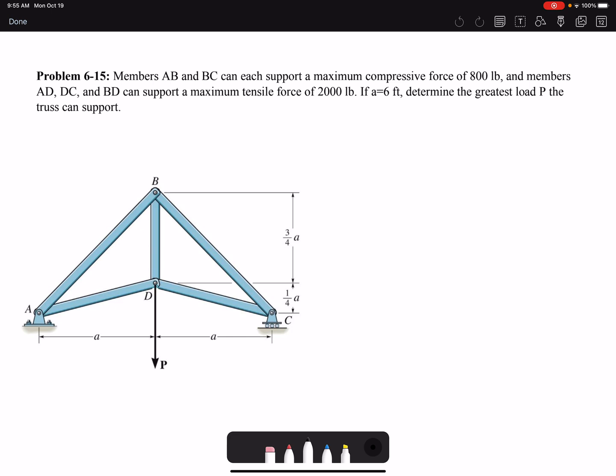Members AB and BC can each support a maximum compressive force of 800 pounds, and members AD, DC, and BD can support a maximum tensile force of 2000 pounds.